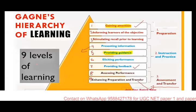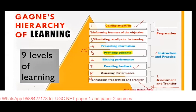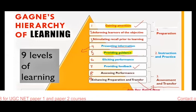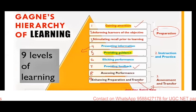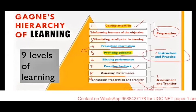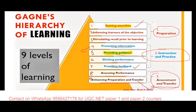Gagné's nine levels of learning: gaining attention, informing the learners, stimulating the recall of prior learning, presenting information, providing guidance, eliciting performance, providing feedback, assessing performance, and enhancing preparation and transfer. The first stage goes with preparation — where you have the first three activities. Next is instruction — the next three activities. And the last two come in the part of assessment and transfer.